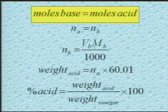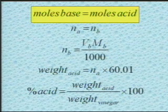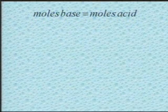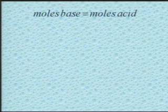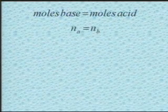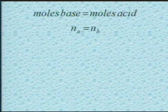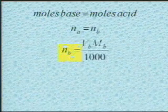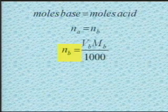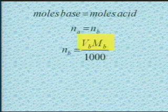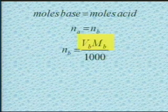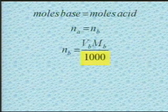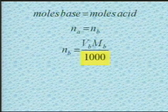To do the calculations for this experiment, we start with the assumption we make when we do a titration: at the end point, the number of moles of base that you've added, which you know, will be equal to the number of moles of acid which are present, which you don't know. We symbolize number of moles with the small n, so N_A equals N_B — number of moles of acid equals number of moles of base. To calculate the number of moles of base, take the volume of base in milliliters, multiplied by the molarity of base (which will be on the bottle in the lab), divided by 1000 to convert milliliters to liters.